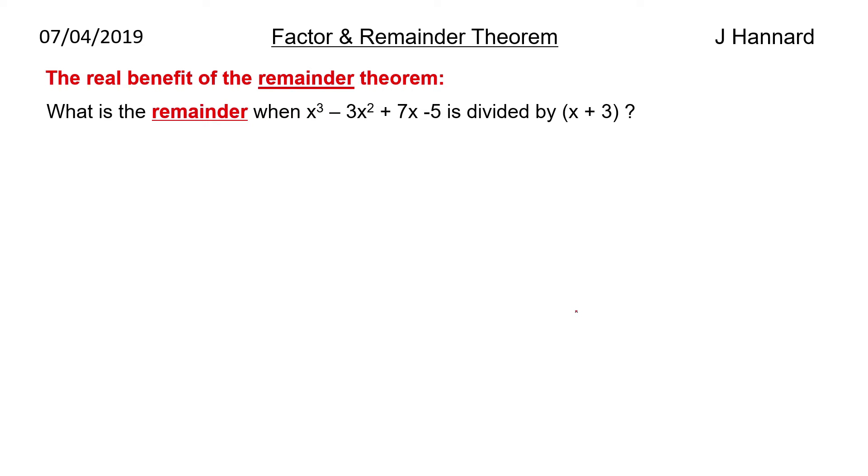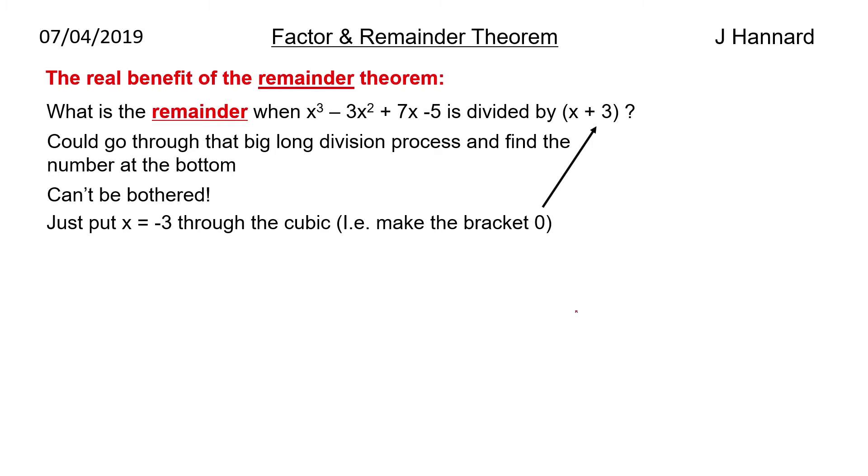So what is the remainder when x cubed minus 3x squared plus 7x minus 5 is divided by x plus 3? Well, we could go through the big long division process and find the number at the bottom. But I can't be bothered today. I could be bothered yesterday but I couldn't be bothered today. So we just put x equals minus 3 through the cubic, i.e. make the bracket 0.